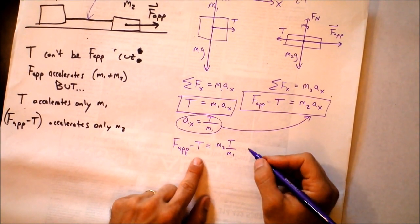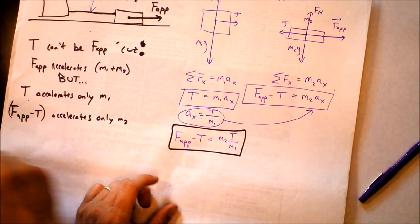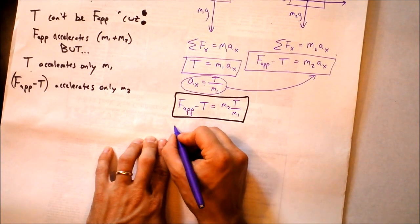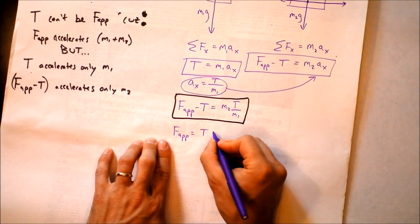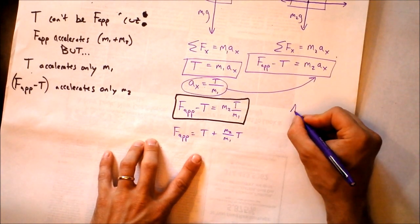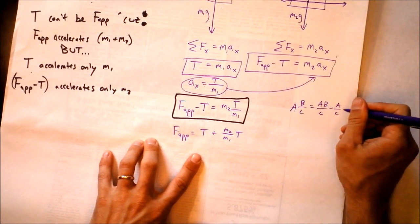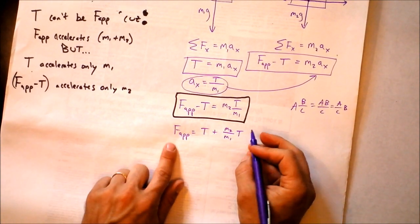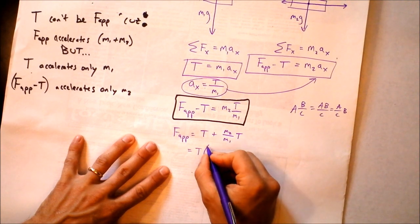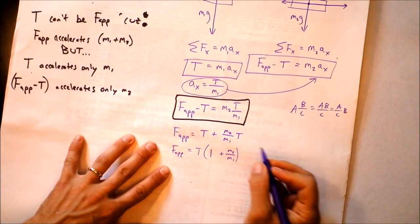We're trying to find the tension and there are two of them in this equation. Let's get all the tensions onto one side by adding T to both sides: F_applied = T + (M2 / M1) * T. Now we can factor out the tension: F_applied = T times (1 + M2/M1).